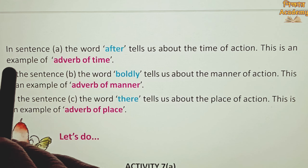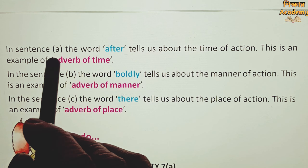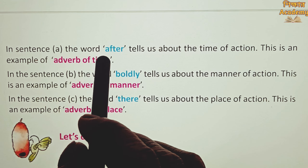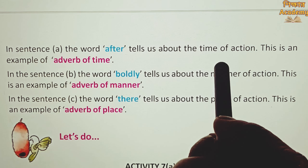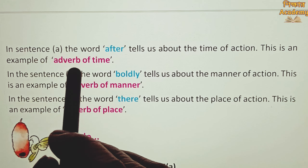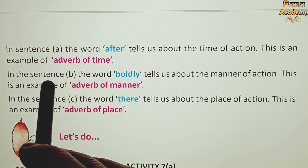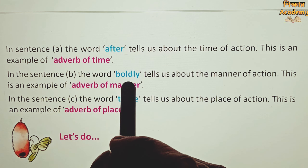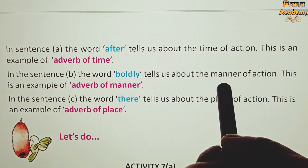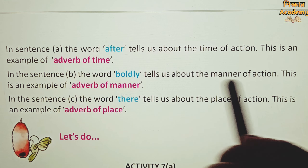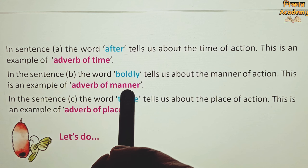This is an example of adverb of time. Sentence B — the word 'boldly' tells us about the manner of action. He inspired the Indian youth to boldly fight for freedom. This is an example of adverb of manner.